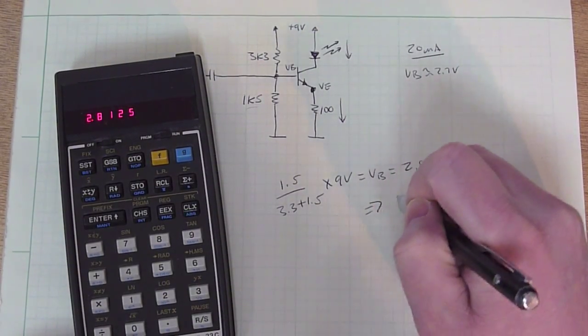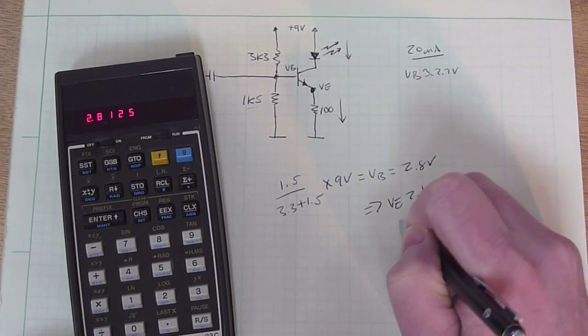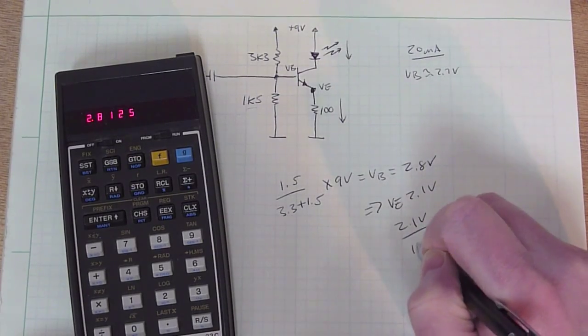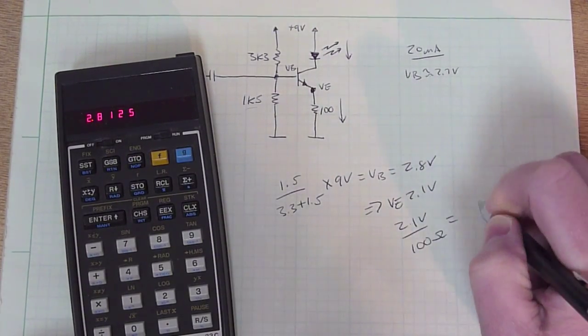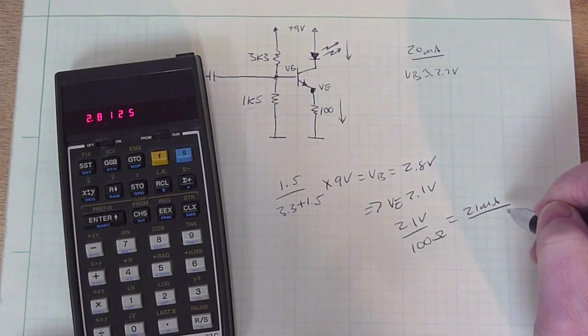So that implies that the emitter voltage is 2.1 volts, and so 2.1 volts over 100 ohms gives us 21 milliamps. So our design is doing what we want.